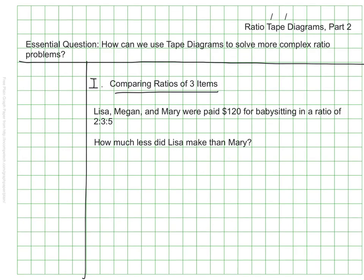So in this example we have three students who were paid for babysitting and we're trying to figure out how much less Lisa made than Mary and all we know right now is the ratio of their rate. Without the tape diagram method I could imagine myself using guess and check to figure out how much they each made that added up to $120. But the tape diagram method is a really quick way for me to visually see how much each student made.